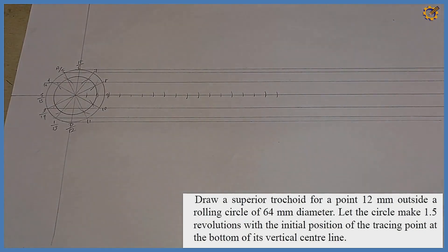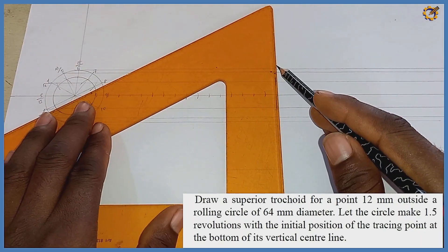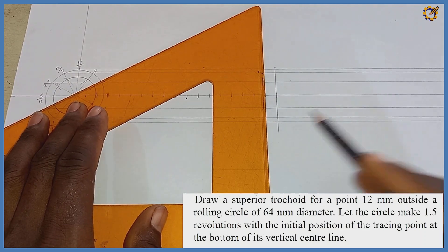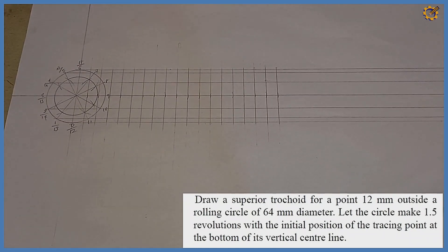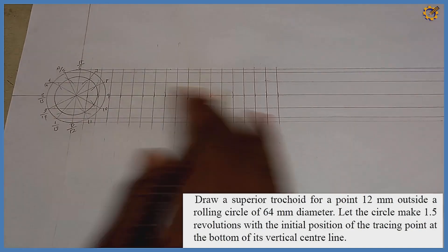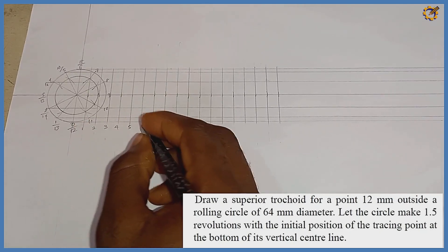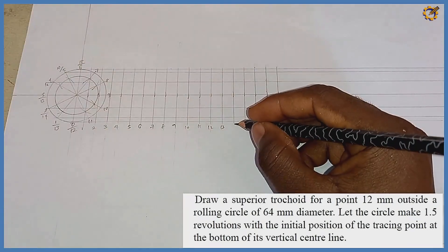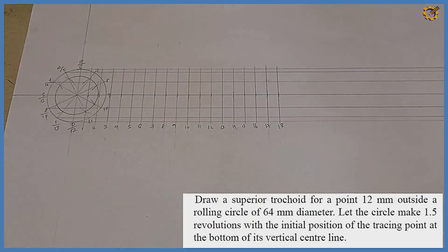Now I project each of the offset points vertically downward — starting from each division point, projecting them vertically in order. After drawing these vertical projections, I number the positions on this lower plane: 1, 2, 3, 4, 5, 6, 7, 8, 9, 10, 11, 12, 13, 14, 15, 16, 17, and 18.